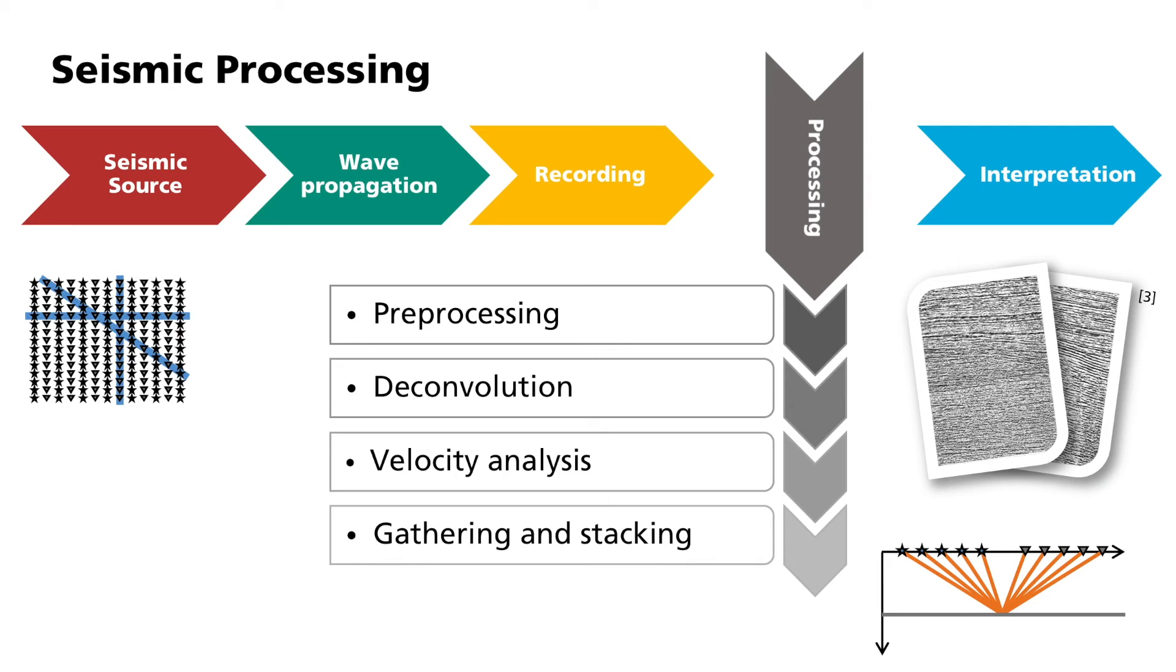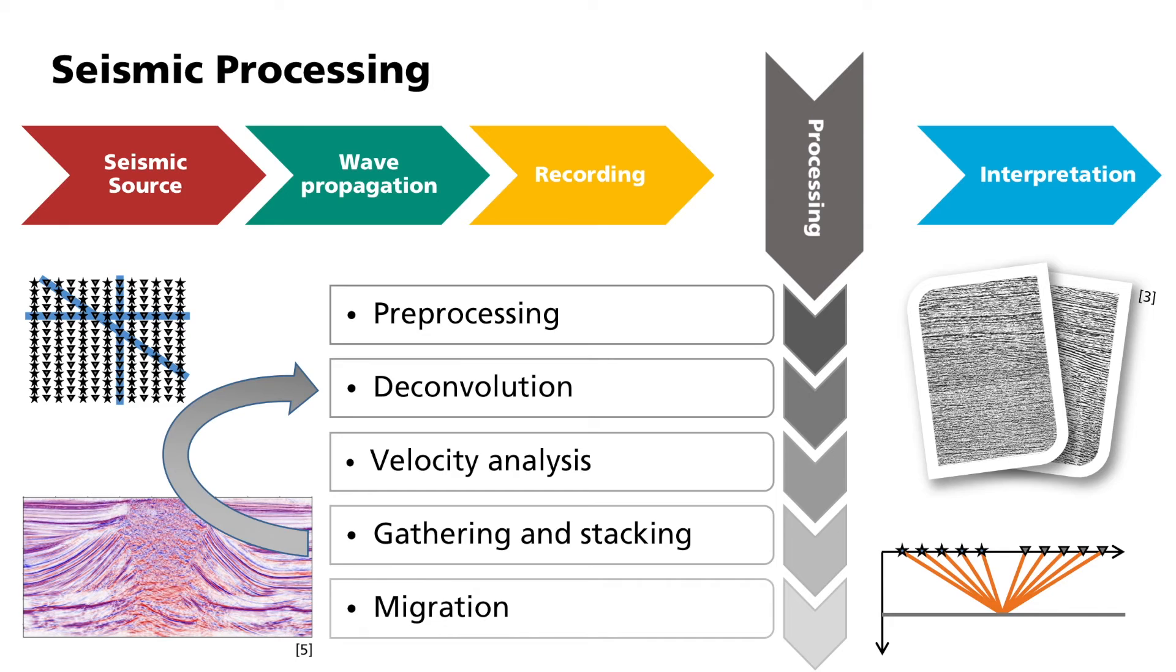The reflectors are, however, still assigned within the time range of the seismogram, and neither to their true depth nor their lateral position. These three steps, deconvolution, velocity analysis, and stacking, are in practice often applied repeatedly, since the results mutually influence one another. For example, improvements in the velocity model will also bring about improvements in the stacked seismograms. In general, the individual steps of processing are flexible. Depending on the application, the order in which they are used can be varied.